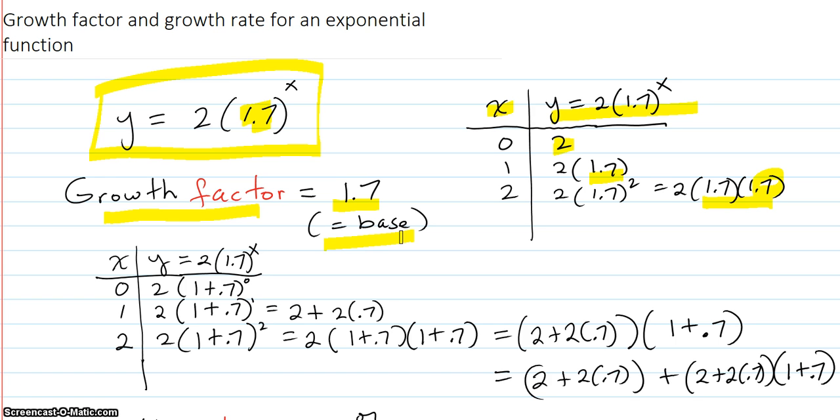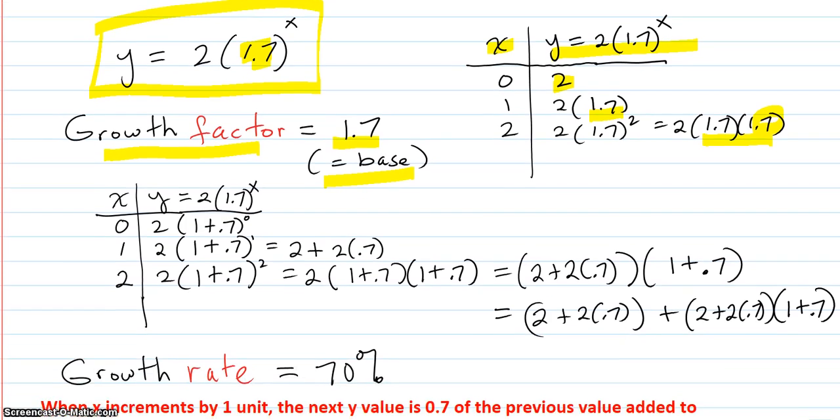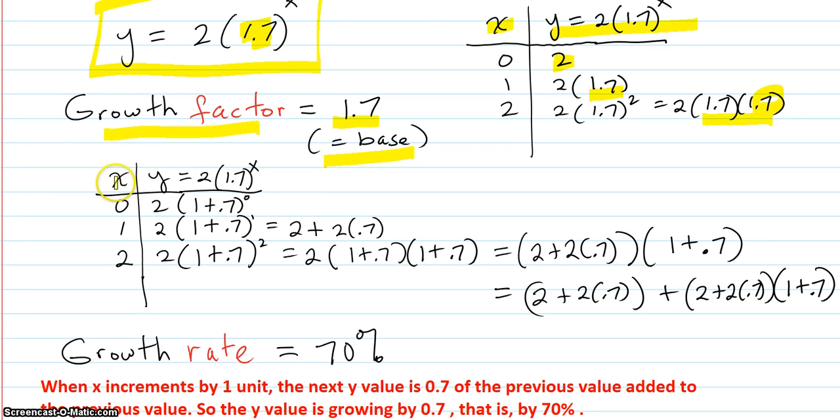Now let's talk about the rate and see what's going on with that. Make another chart with the function. Here's 0. This time we're going to write 2 times, instead of 1.7, I'm going to say it's 1 plus something .7.